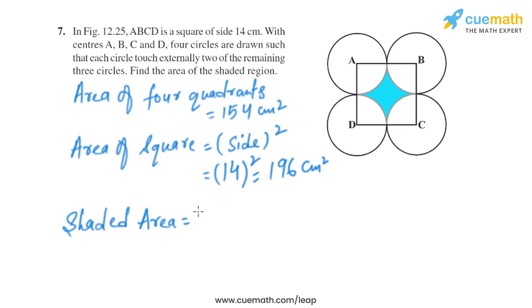Subtracting the area of four quadrants from the area of the square gives us the shaded area: 196 - 154 = 42 square centimeters. That is the shaded area.